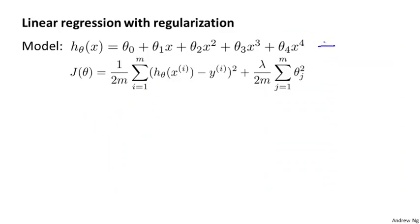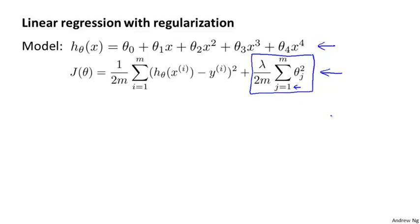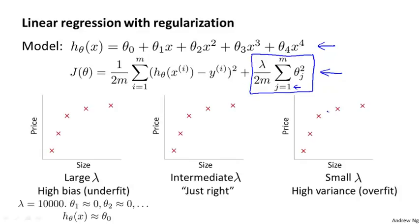Suppose we're fitting a high order polynomial like that shown here. But to prevent overfitting, we're going to use regularization like this. We have this regularization term to try to keep the values of the parameters small. The regularization sums from j equals 1 to m rather than j equals 0 to m. Let's consider three cases.